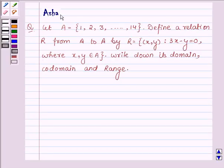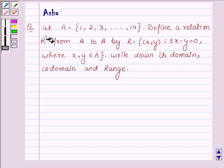Hi and welcome to the session. I am Asha and I am going to help you with the following question which says: If A is a set having elements 1, 2, 3 and so on up to 14, define a relation R from A to A by R equals ordered pair x, y such that 3x minus y equals 0 where x and y are elements of A. Write down its domain, co-domain and range.